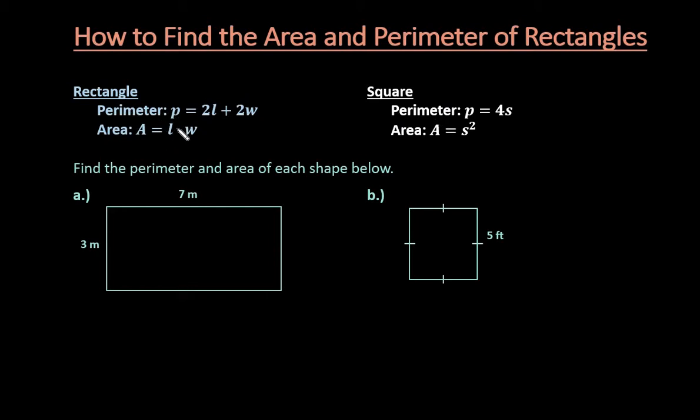For a rectangle, the perimeter is equal to two times the length plus two times the width. Some textbooks do list it as two times the base plus two times the height, but this one is more often seen. Either one of these will give you the same thing.